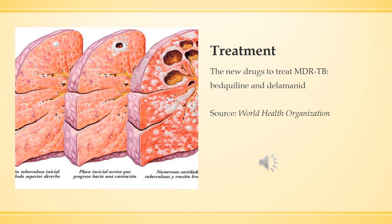If you look at the picture on the left, you can see 3 cross-sections of a human lung. The lung on the left is a patient in the early stages of tuberculosis. The one in the middle is a slightly later stage, and the one on the far right is a multidrug-resistant tuberculosis patient, or a tuberculosis patient that has not been successfully treated.